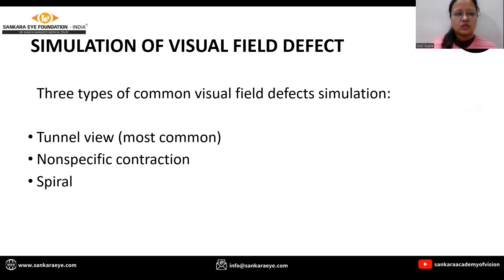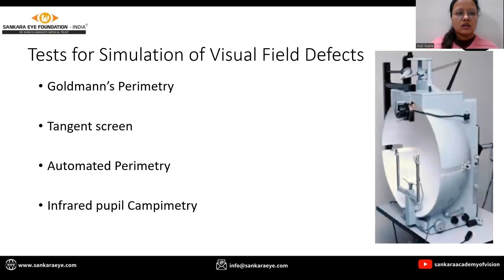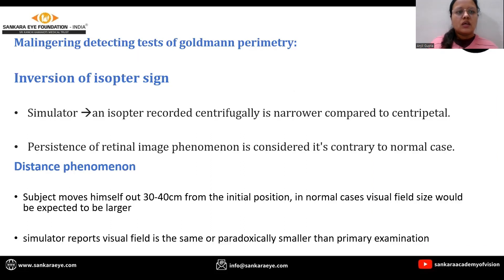Simulation of visual field defects: three common types of simulated visual field defects include tunnel vision, the most common non-specific contraction, and spiral view. Tests for simulation of visual field defects include Goldman perimetry, tangent screen, automated perimetry, and infrared pupil campimetry.